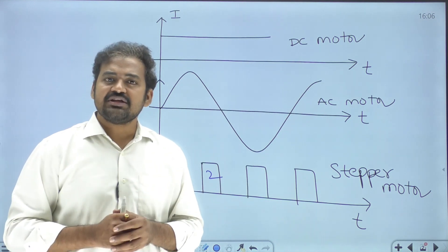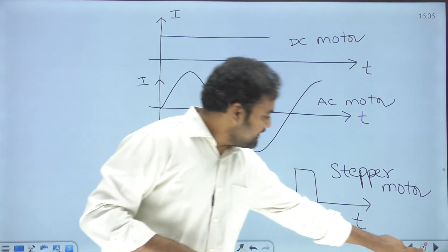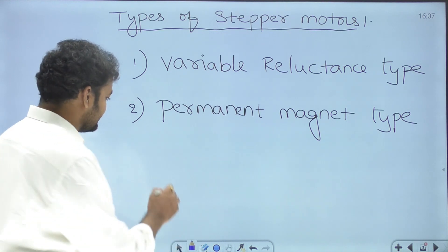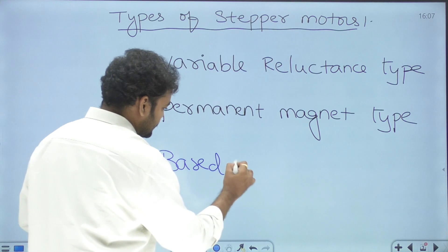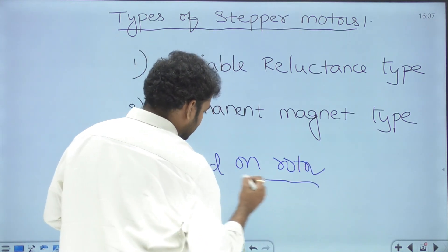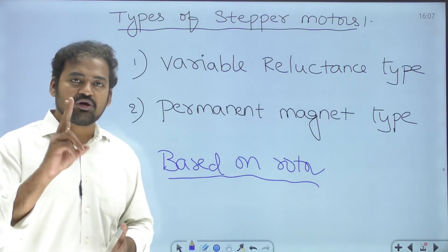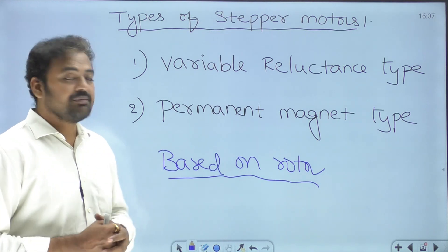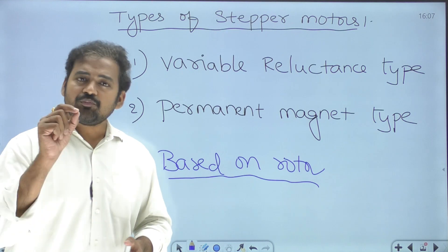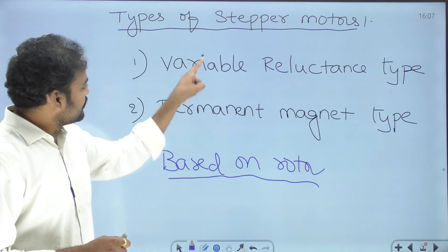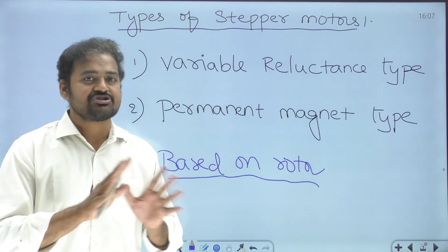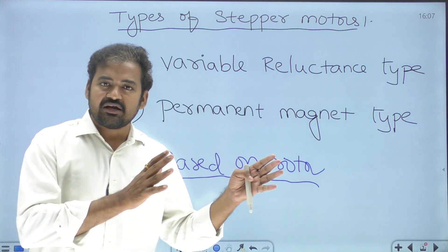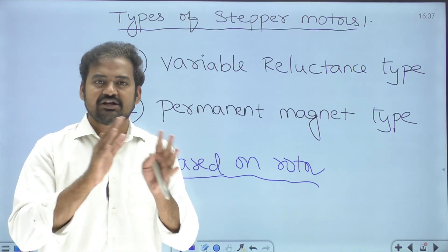There are basically two types of stepper motors based on the design of the rotor magnetic circuit: first, variable reluctance type stepper motor; second, permanent magnet type stepper motor. Even though the rotor designs are different, the stator design is the same for both machines. That is why we will first discuss the stator magnetic circuit design, then move to the different types of rotors.